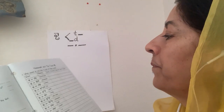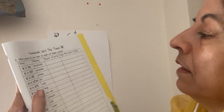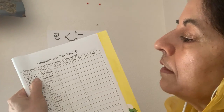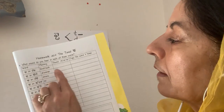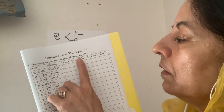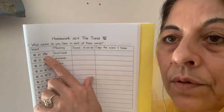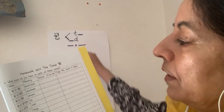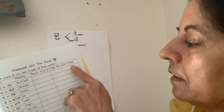Easy peasy. Now you have to tell what sound do you hear. Tadda and gand — gand means knot or sack. What sound — Tuh or Duh? Does it come at the beginning or end of a word? If it comes at the end, it makes a sound Duh — remember that. And then copy the word four times: gand, gand, gand, gand.